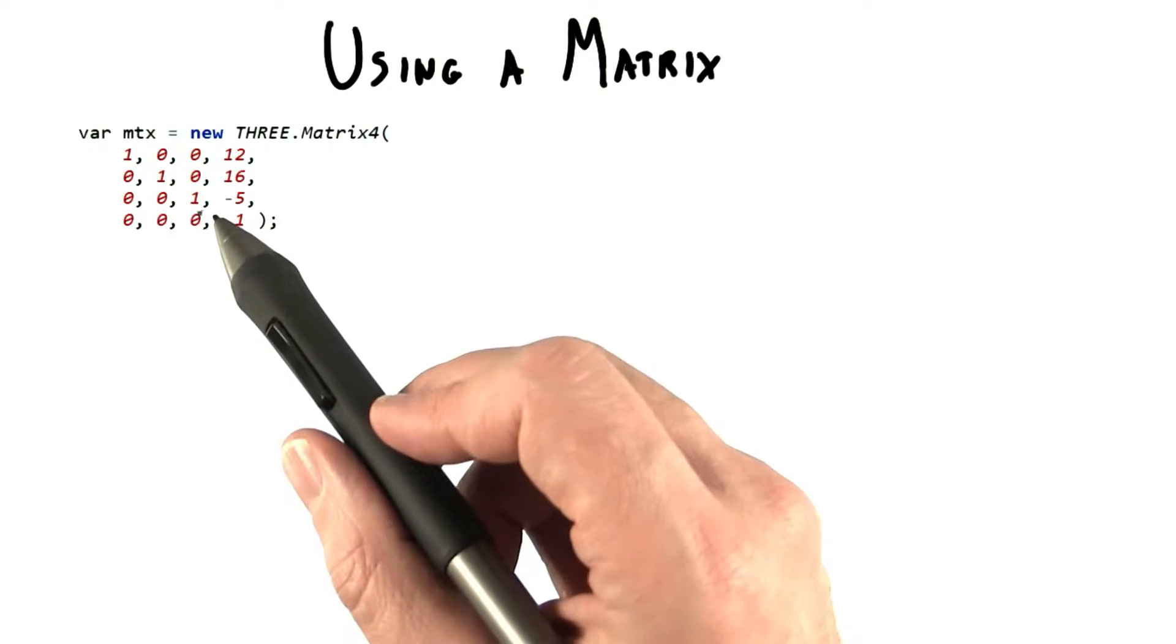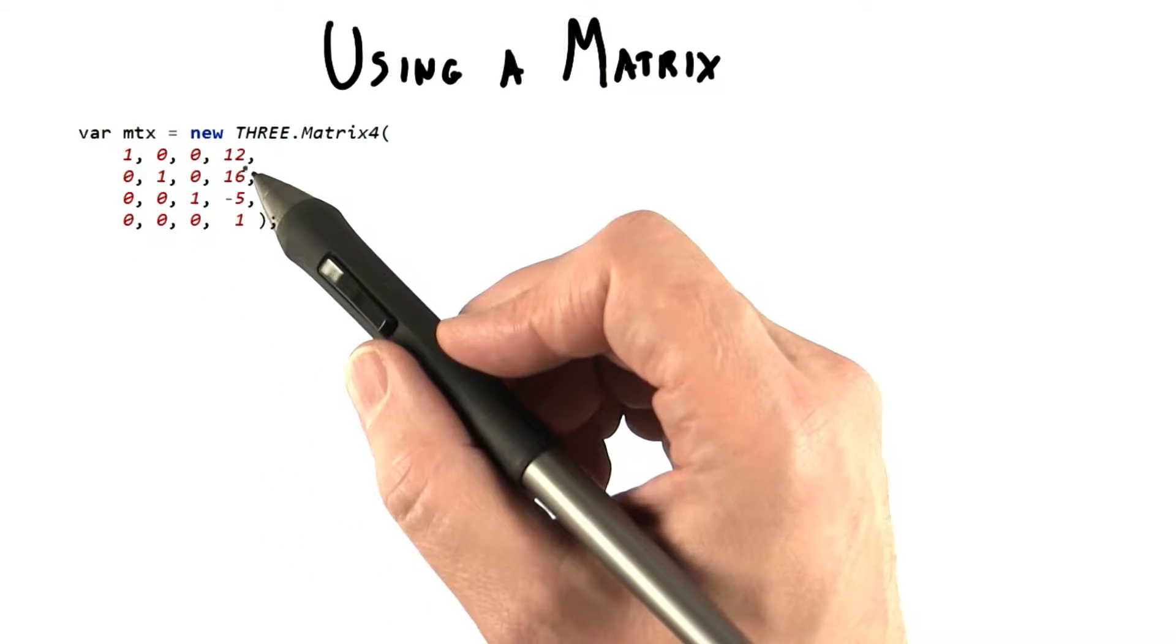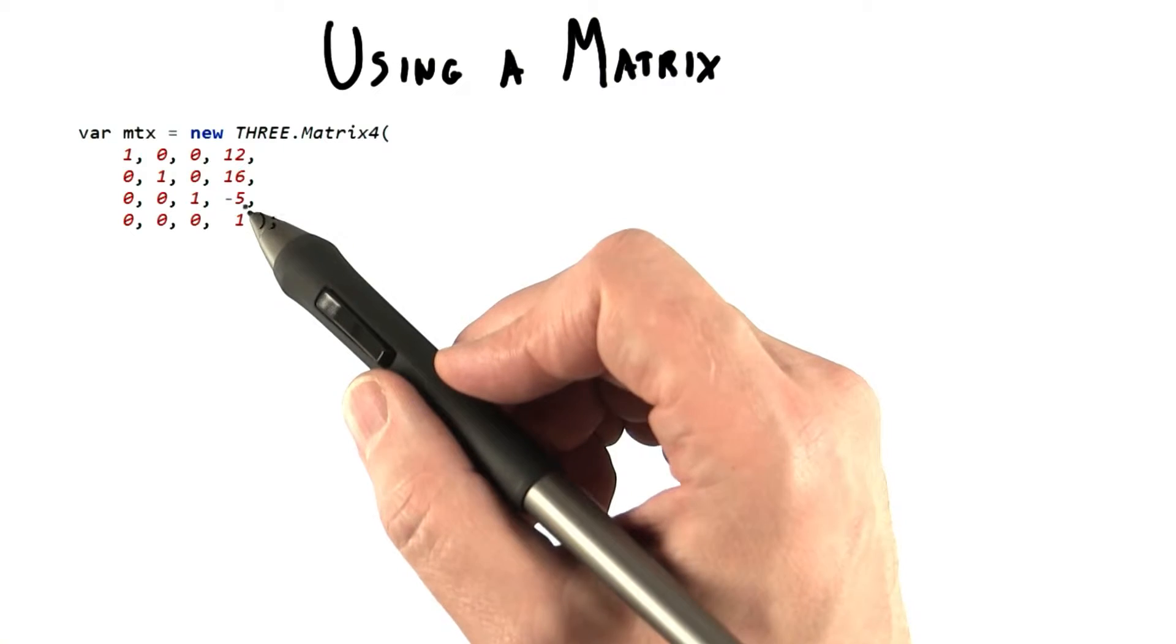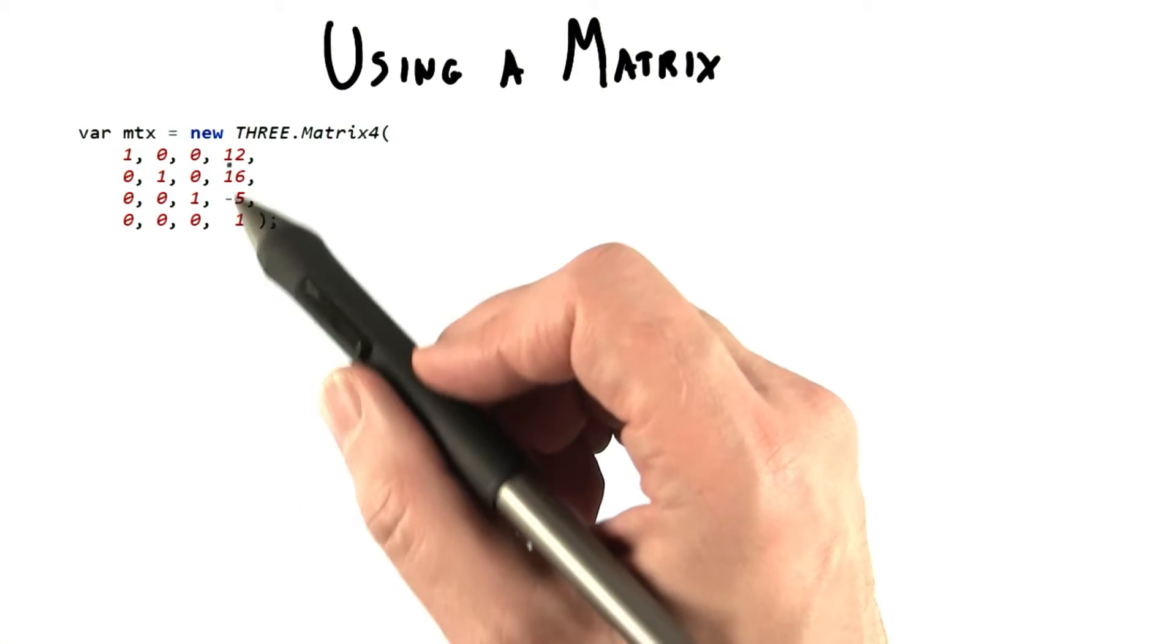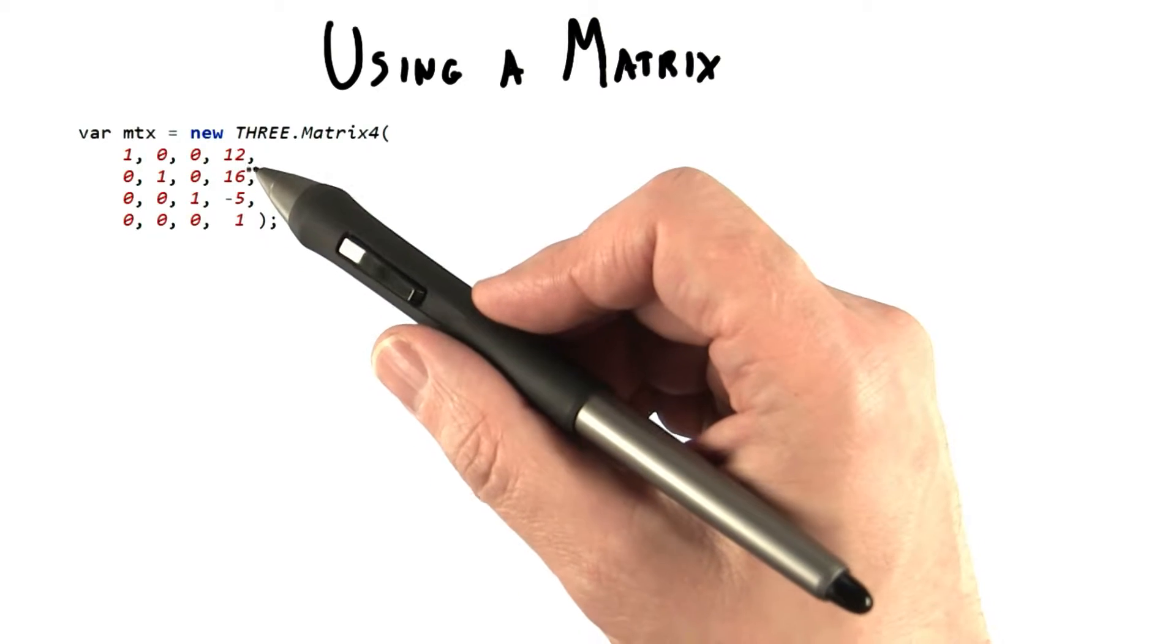These values happen to set the matrix to perform translation, moving an object to the position 12, 16, negative 5. Note that this initialization is purposely made to look like column major form, where the translation values are on the right.